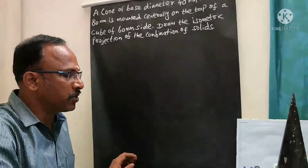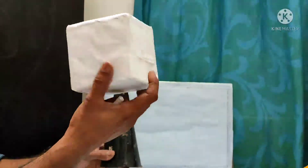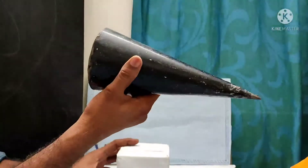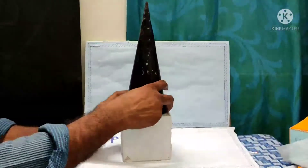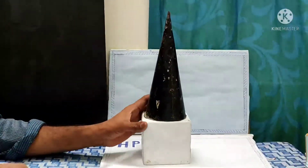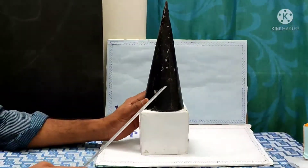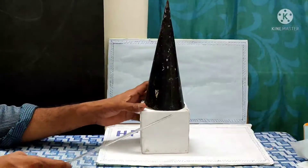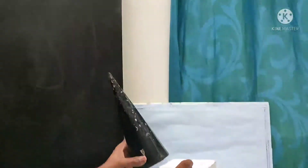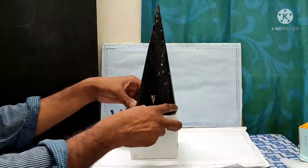Coming into the demonstration, we have the models. This is the cube made of 60 mm side. This is actually the cone. Now I am going to place the cone on the top of this particular cube. We want to draw the isometric projection for this particular solid. First draw the isometric projections of this cube, upon which you need to draw the isometric projections of the cone.